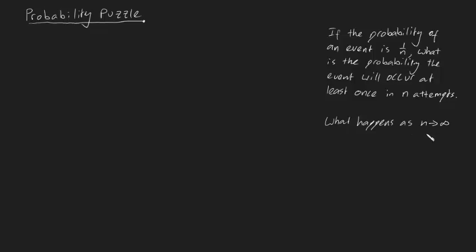I think this is a pretty interesting probability puzzle, so pause it and have a shot and then come back when you're done. Okay, well in order to solve this what I'm going to do is I'm going to define a variable capital X, which I will define as the number of times the event occurs in n attempts.